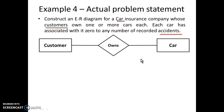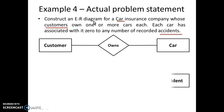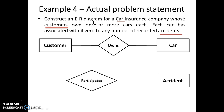First we create the relationship: customer 'owns' car — we'll represent the one-or-more cardinality later. Then there is 'accident' as an entity, associated with both customer and car in the form of participation, meaning customer and car both participate in an event called accident. So three entities are related with each other through this participates relationship.